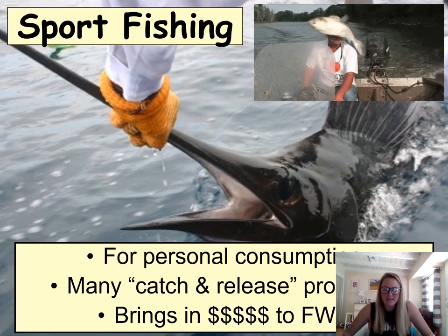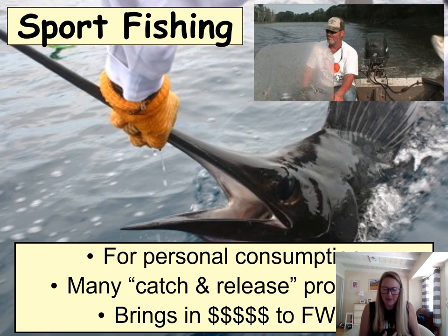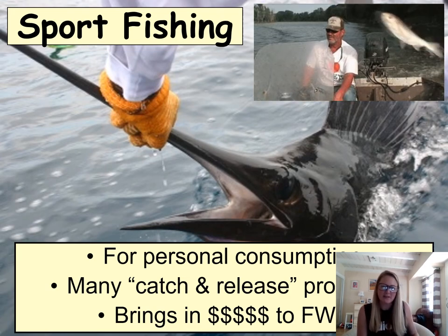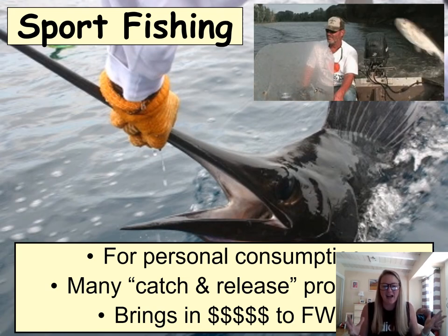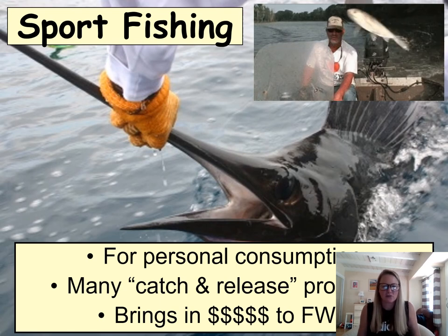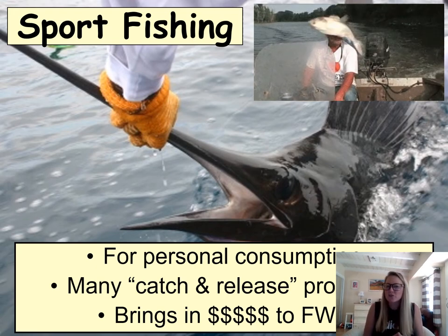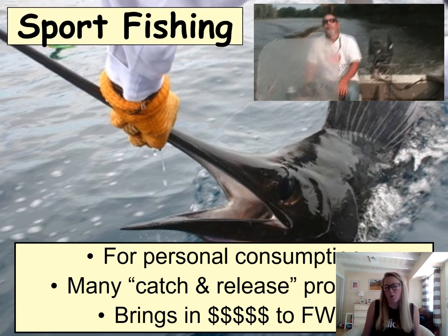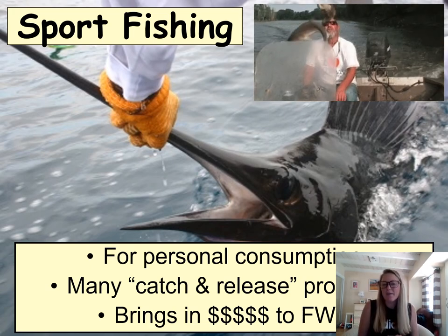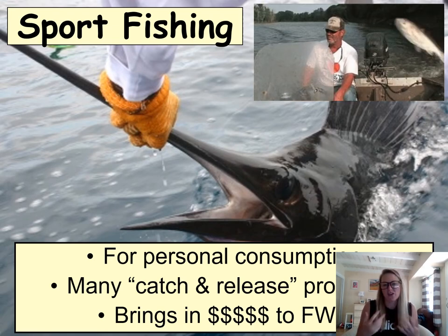Sport fishing involves capturing fish — sometimes people keep and consume them, other times they practice catch and release, taking a picture and releasing the fish back into the water. To sport fish, you usually have to buy a permit from the agency that controls fisheries — here in California it's California Fish and Wildlife Service, and federally it's the U.S. Fish and Wildlife Service. Those permit fees allow the government to invest in keeping fisheries well populated and stocked, and ensuring people aren't violating the rules so the fish actually survive.